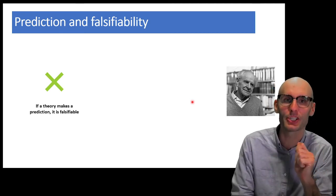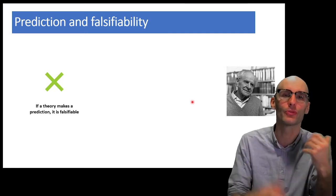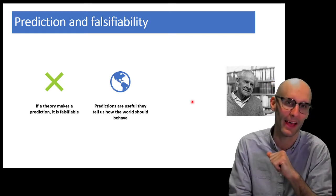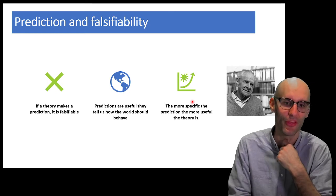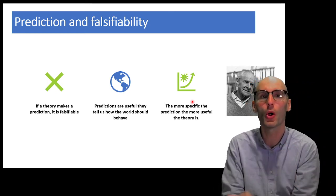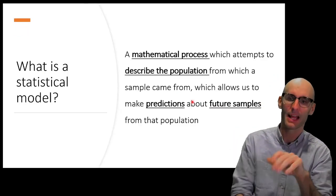And he said a good biological theory must make predictions. And by making a prediction, it is falsifiable by running an experiment to falsify the prediction that that theory makes. The prediction should be useful and tell us about how the world should behave. And the more specific the prediction, the more useful the theory is. That should give you a hint about what a statistical model is. It's all about making predictions. Let me explain.